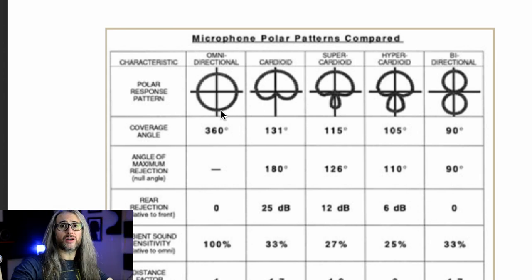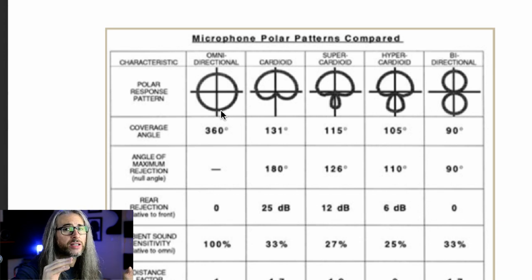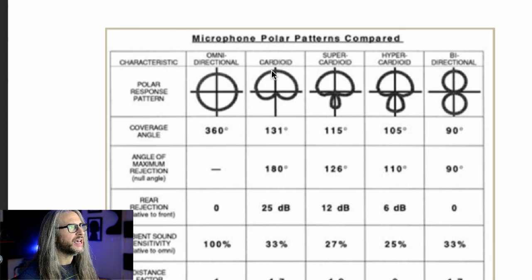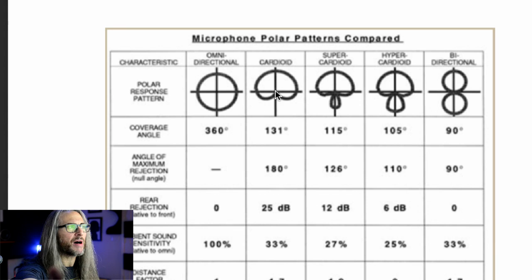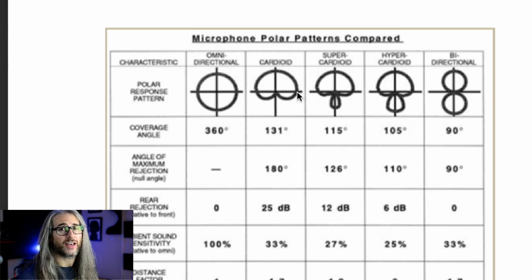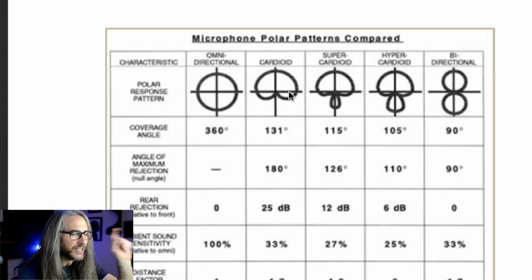Omni is good for room tone and ambience capture, but if you're doing direct interviews, you do not want to be on an omni pattern. The next pattern is cardioid — it picks up mostly from the front with good rear rejection, though not total. This is what most commercial and podcast microphones use. If a microphone only has one pickup pattern, it's going to be cardioid — most common, clean sound, very nice.